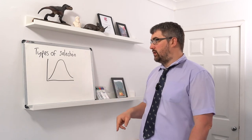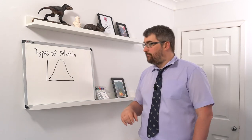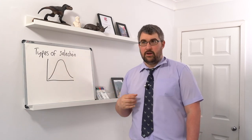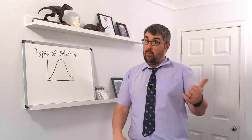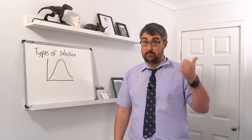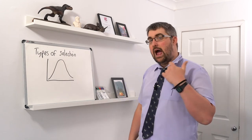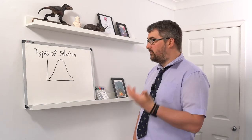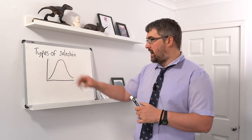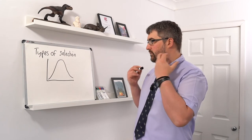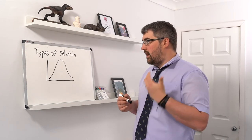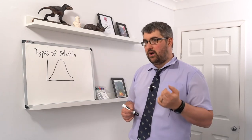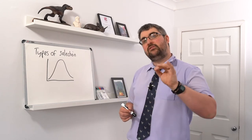With our normal distribution curve established, we can see how selection changes its shape. Beneficial alleles are selected for and negative alleles are selected against. There are two main ways the distribution can change: stabilizing selection and directional selection.